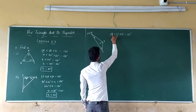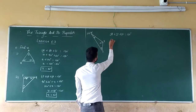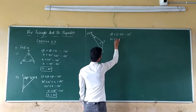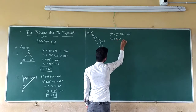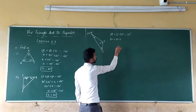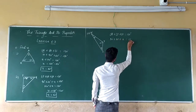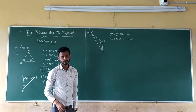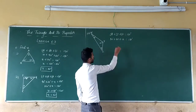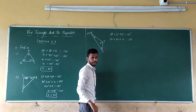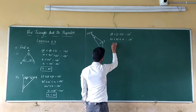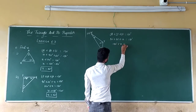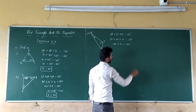So angle X is 30 degrees, plus angle Y is 110 degrees, plus angle Z is X, which is equal to 180 degrees. So 30 degrees plus 110 degrees equals 140 degrees. Plus X, which is equal to 180 degrees.